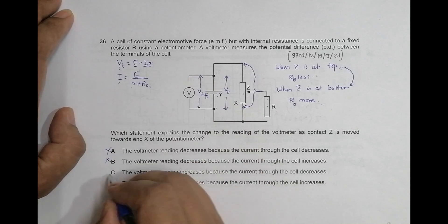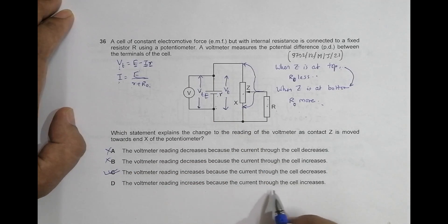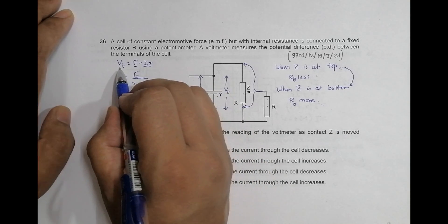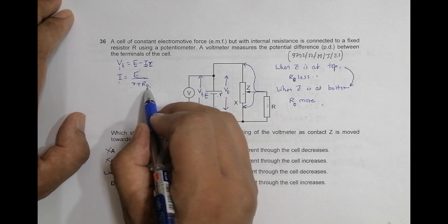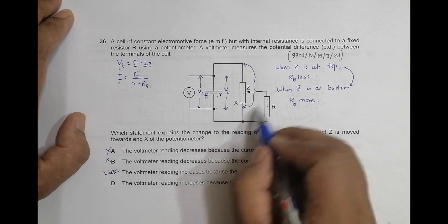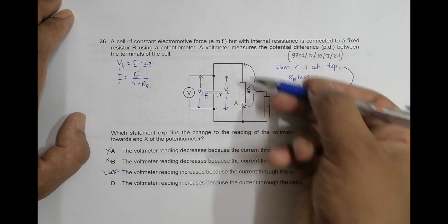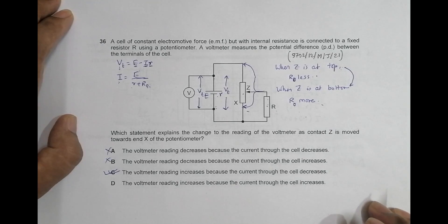The answer that says the voltmeter reading increases is correct, but any choice stating the current through the cell increases is not true. Current decreases because R_outer increases as you move the contact from one end to the other. That's the solution to this question.